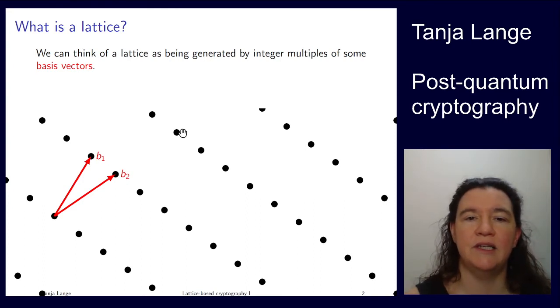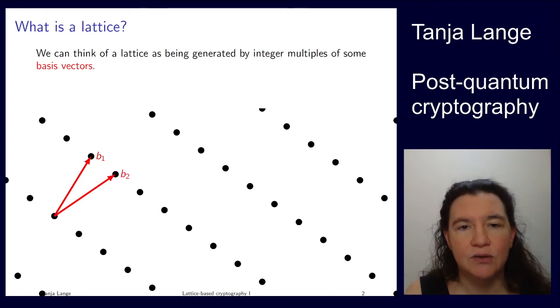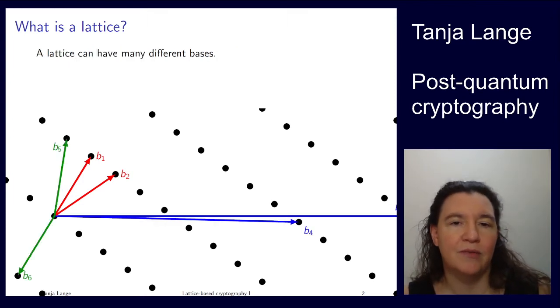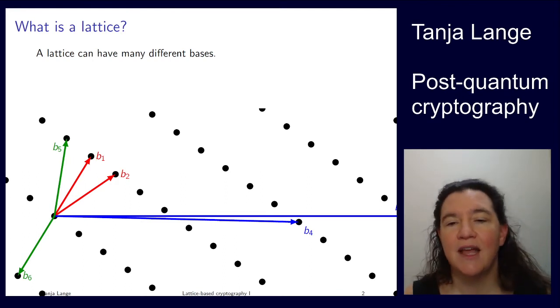For instance, you get here by taking two times b2. You get here as minus b1. Now we have these two vectors, but there are many other ways of describing these lattices. Here are different, each color is giving you a different basis. The green two vectors, b5 and b6 form a basis, or the blue ones, b3 slightly off on the right here, and b4 form a basis.